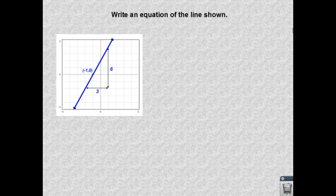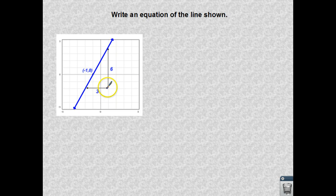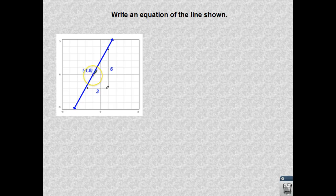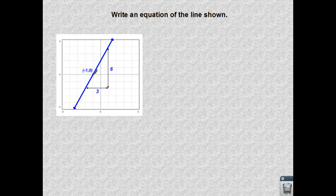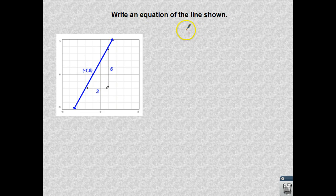This one says, write an equation of the line shown. So we see that dark blue line on the grid. We have these random numbers. I see a 3, a 6, and this random ordered pair here. Some of the information is necessary, and one piece of it is unnecessary. Can you pick out the piece of unnecessary information if I need to put this into slope-intercept form?